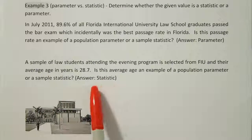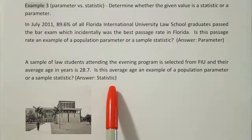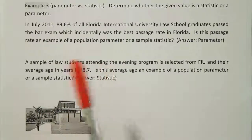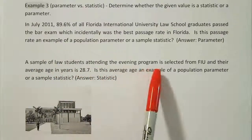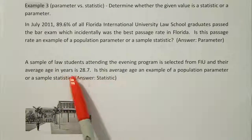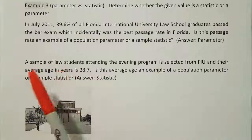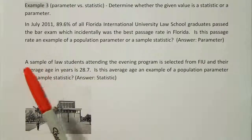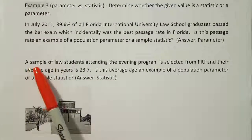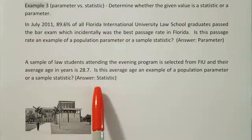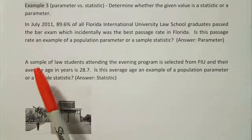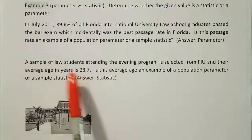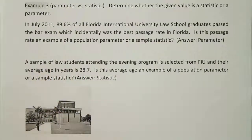The answer here is statistic because it's just a sample of the law students attending the evening program that they looked at. This average age is derived from a sample, and remember, things that are calculated from samples are statistics. So this is a statistic because it's been calculated from a sample.